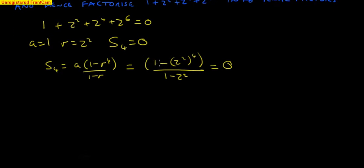Just taking this again and making it look a bit simpler, we end up with 1 minus z to power 8 over 1 minus z squared equals 0.